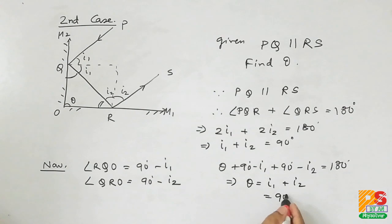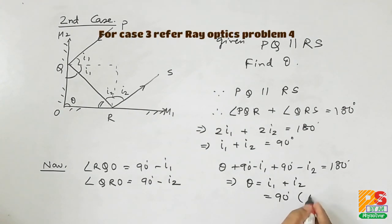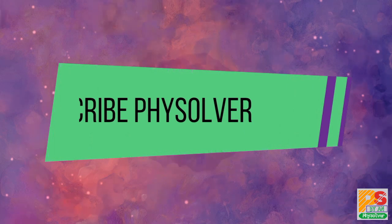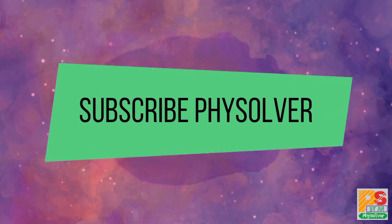That is 90 degrees. So our answer is 90 degrees. Thank you for watching this video. Please subscribe my channel Phi Solver. I'll see you in the next video.